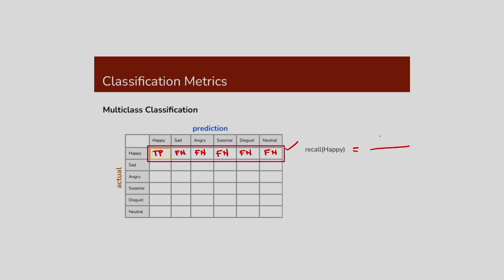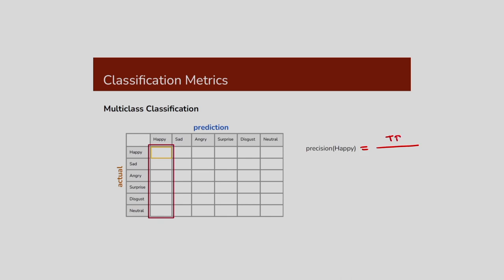For determining recall, I have to consider the row in the confusion matrix, because recall = TP / (TP + FN). The diagonal entry is the true positive and the rest of the row are false negatives. For determining precision, I have to consider the column, because precision = TP / (TP + FP) — the false positives come from other classes misclassified into this class.